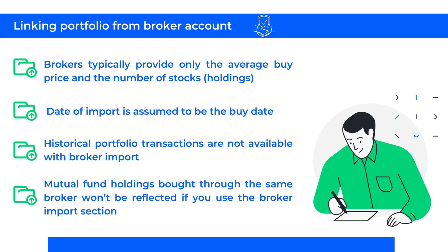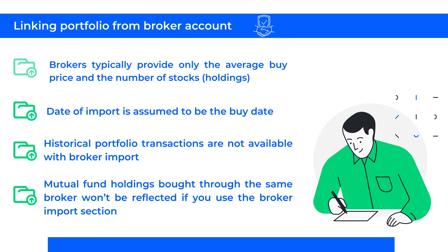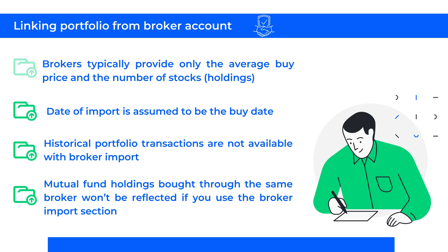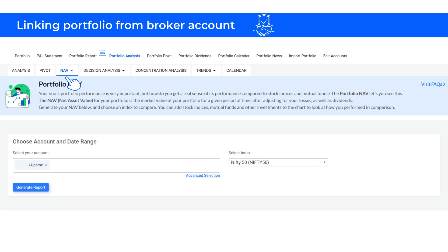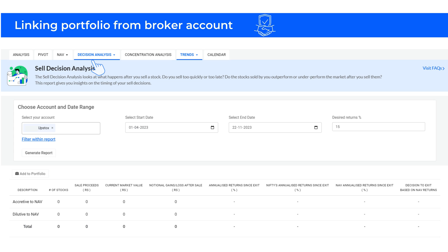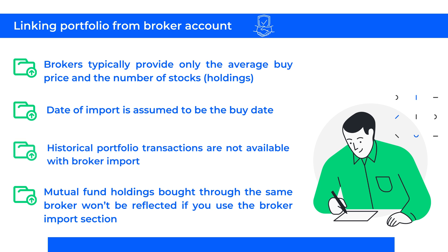While using Trendline's portfolio, a few important points to note: brokers typically provide only the average buy price and the number of stocks or holdings, so the date of import is assumed to be the buy date. This means features that need specific buy and sell dates — like portfolio NAV, transaction analysis, and decision analysis buy and sell — won't work accurately. Historical portfolio transactions are not available with broker import because brokers don't share this data in the sync method.